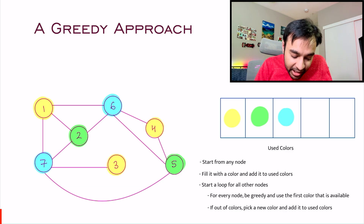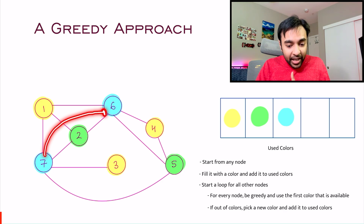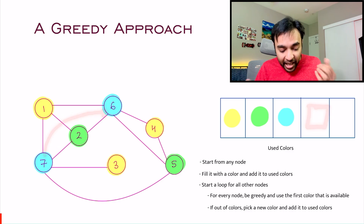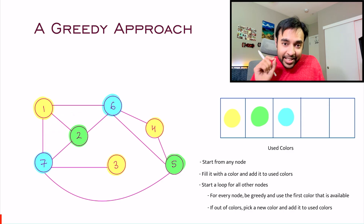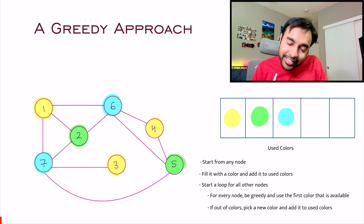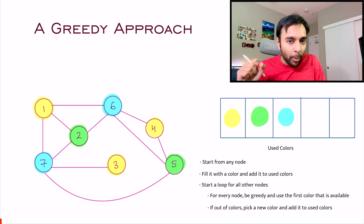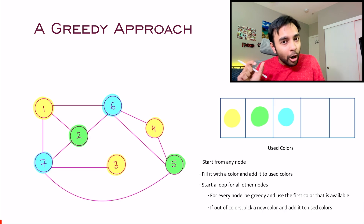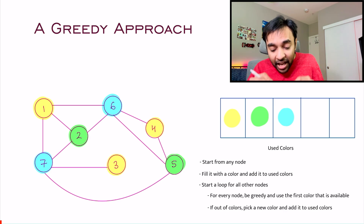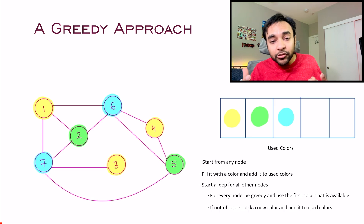Notice that if node 7 was connected directly to node 6, then you could not have used blue either — you would have to pick up a new color and use it with 7. This greedy method is one way to approach this problem. The interesting part is that this is not optimal — you can call it near-optimal. That means it will give you an almost optimal solution, but never a completely optimal solution. And that is because this problem is NP-hard.